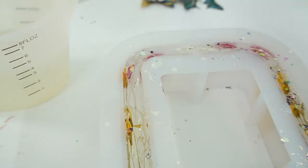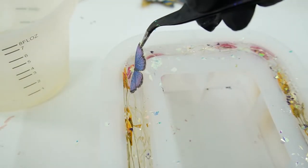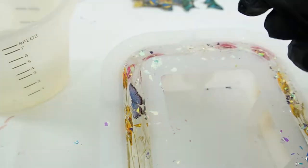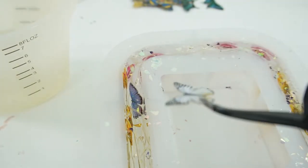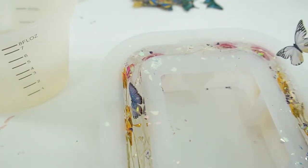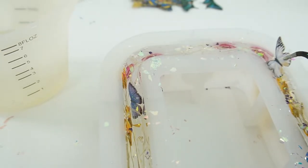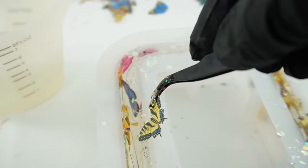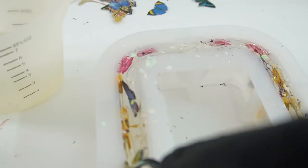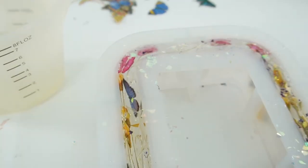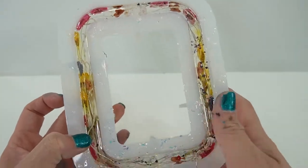Now we can add the butterflies. I love that these butterflies are double-sided, so you can see them from the front and the back of the vase. And one more here. Now we wait. All right everyone, so it's been a day and we are ready to de-mold.